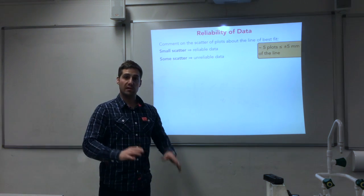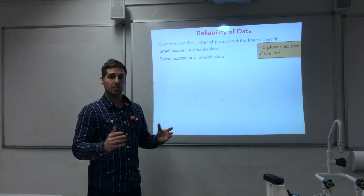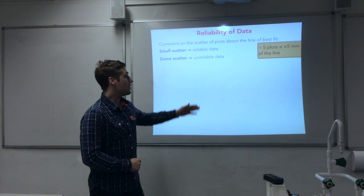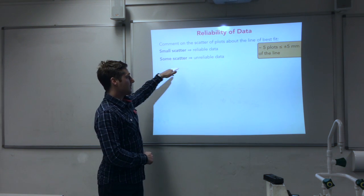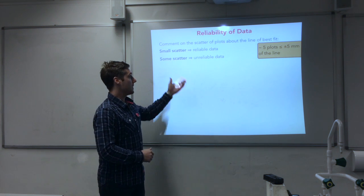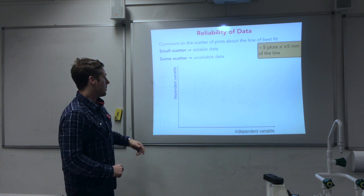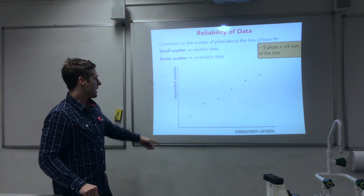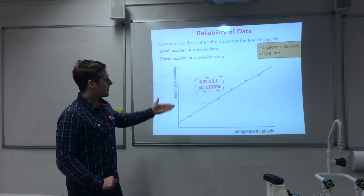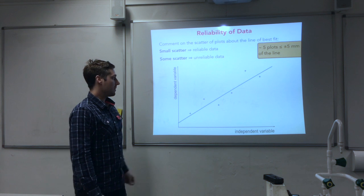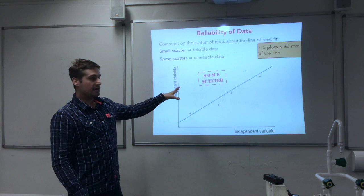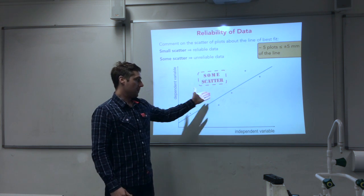So that's what you're looking for. For a standard six plots of data, if you have six plots and five of them are within five millimetres of the line, you've got small scatter. And if you haven't got that — if you've got more scatter than that, if they're further away from the line — then you've got unreliable data. This graph here, with these plots and a line of best fit, we'd say that's got a small scatter, so it's reliable. And if they were more spread out, then we'd say that's got some scatter and is not reliable data.